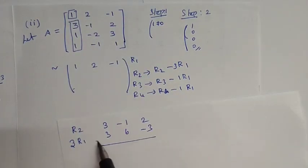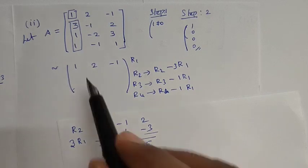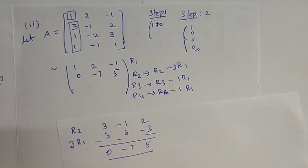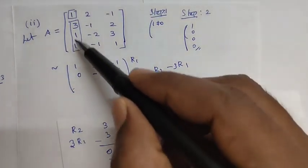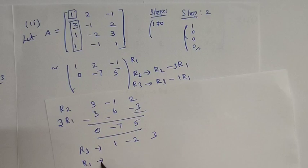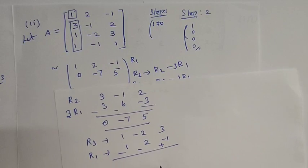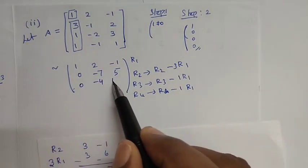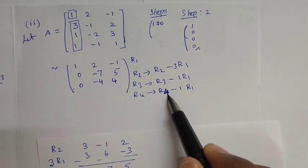This is minus. The first result is 0, minus 7, 5. So the new R2 is 0, minus 7, 5. For R3 minus R1: R3 is 1, minus 2, 3. Now R1 is minus 1, 2, minus 1. We change symbols, giving 0, minus 4.